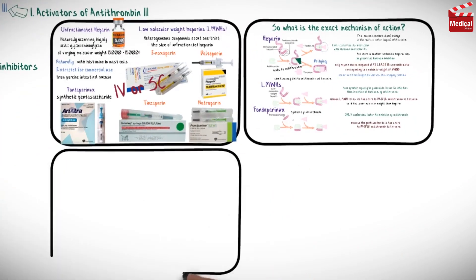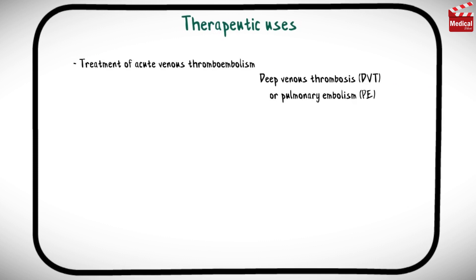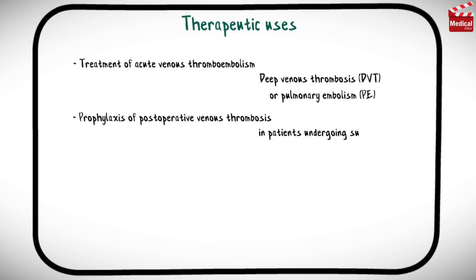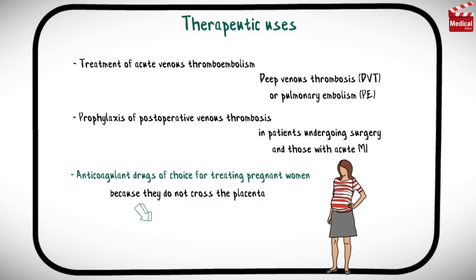These drugs are used in the treatment of acute venous thromboembolism, deep venous thrombosis, or pulmonary embolism. They are also used for prophylaxis of postoperative venous thrombosis in patients undergoing surgery and those with acute myocardial infarction. Importantly, these are the anticoagulant drugs of choice for treating pregnant women, because they do not cross the placenta due to their large size and negative charge.